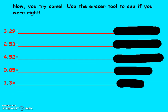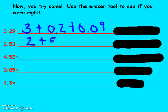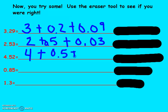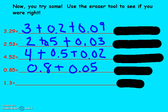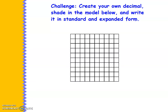Now you try some on your own and see if you are correct in writing expanded notation — pause your video and press play when you're ready for the answers. Three plus two tenths plus nine hundredths. Two plus five tenths plus three hundredths, or plus five tenths plus two hundredths. Eight tenths plus five hundredths. One plus three tenths. Now you can practice making your own decimal — write it in standard and expanded form.